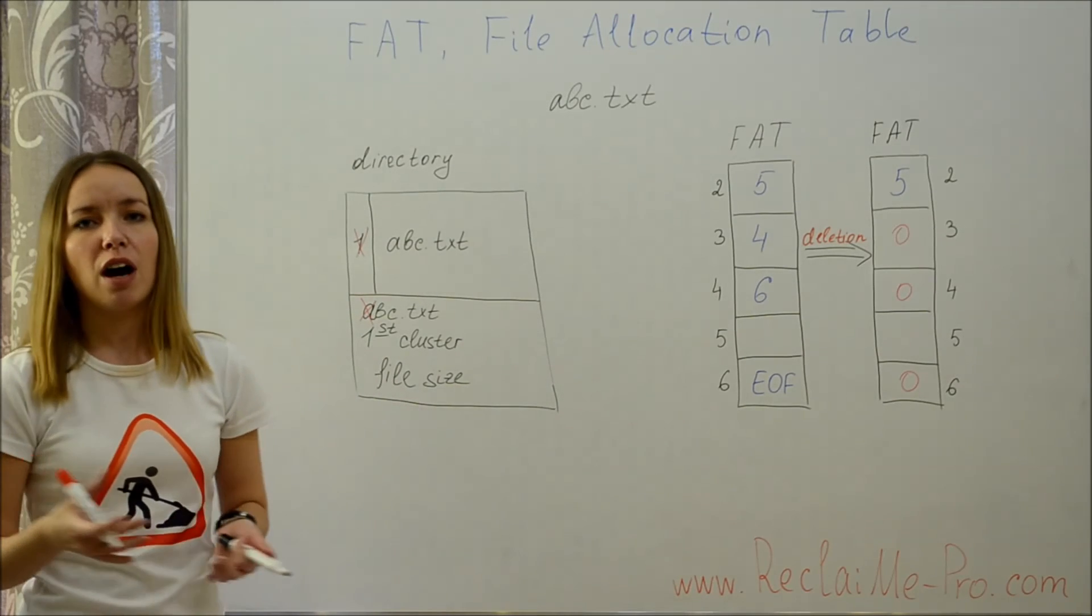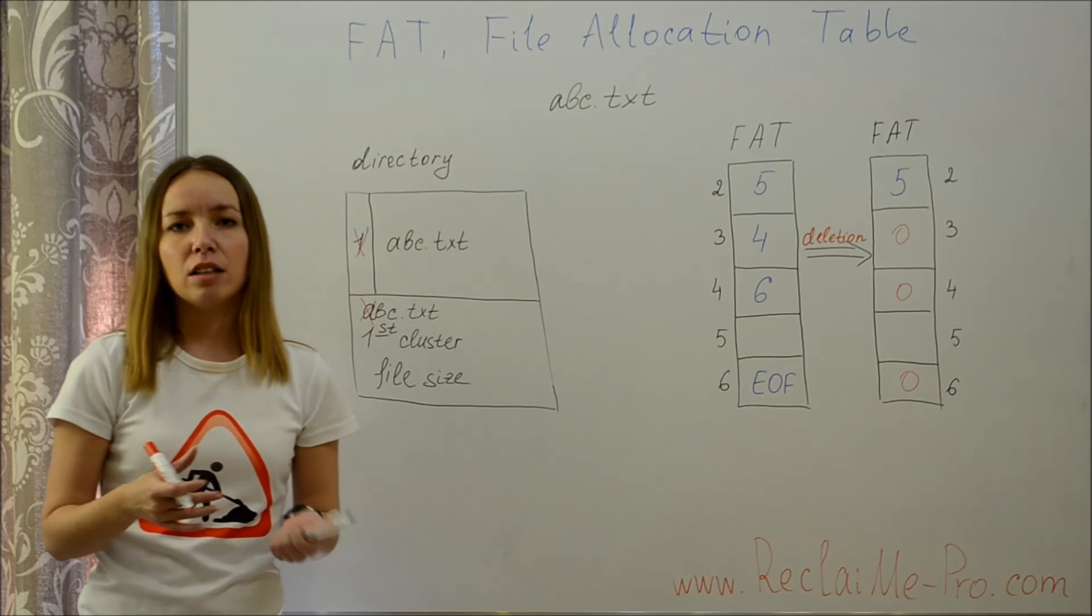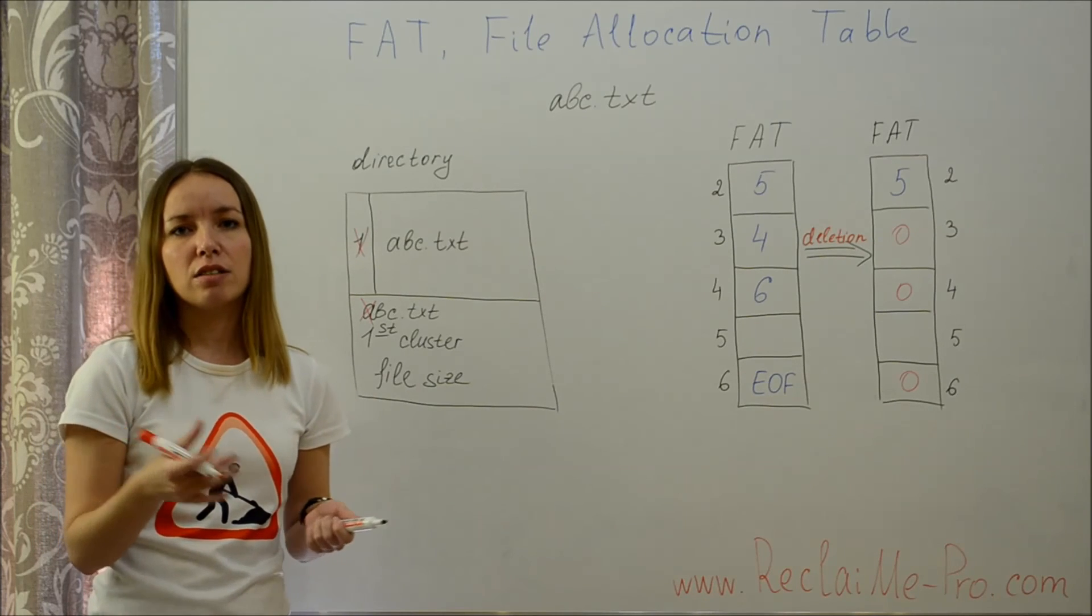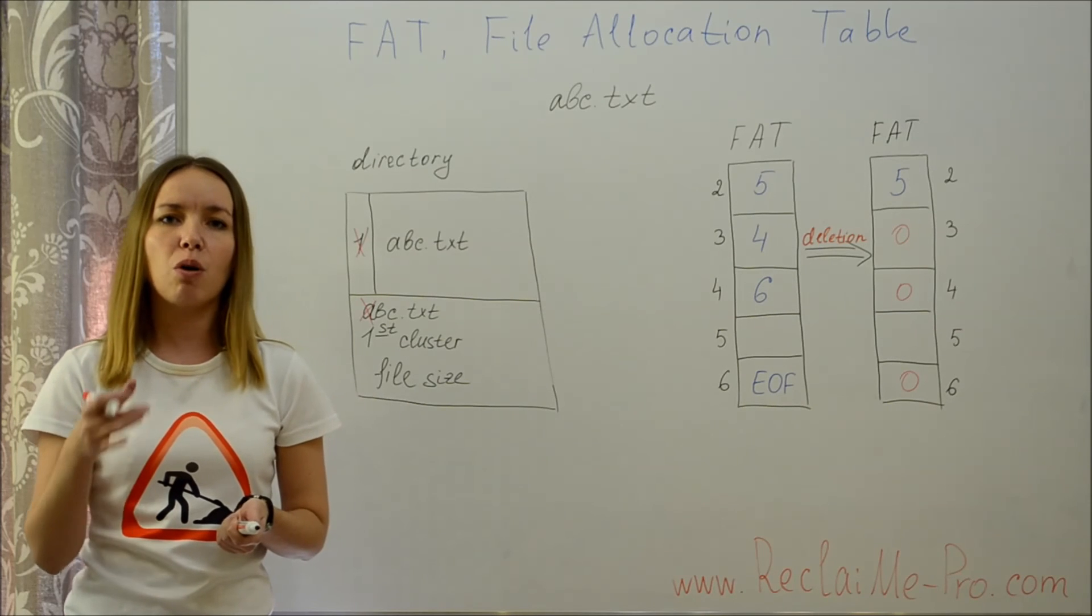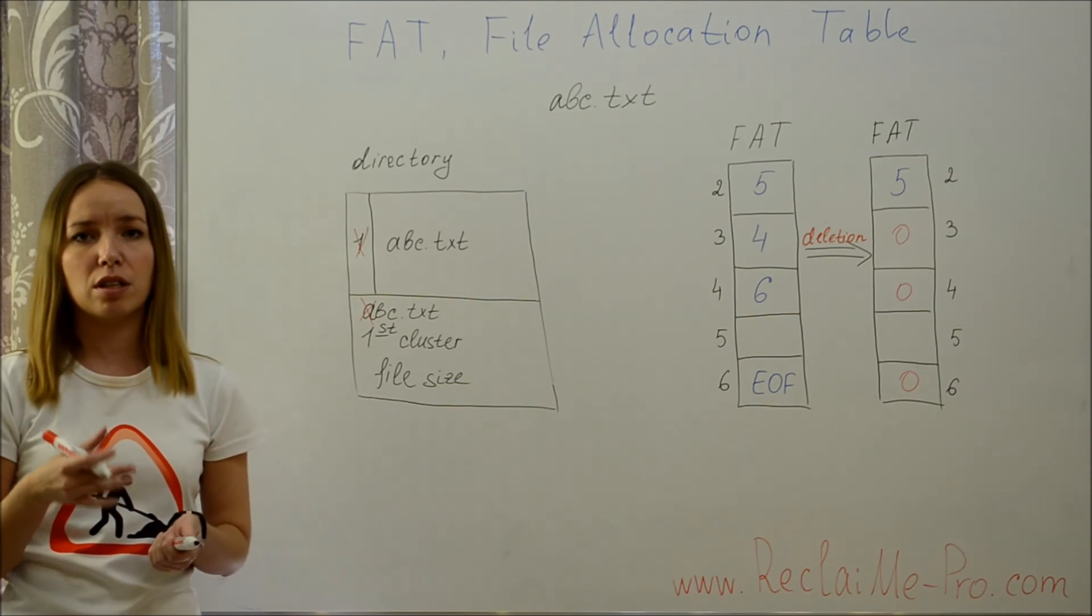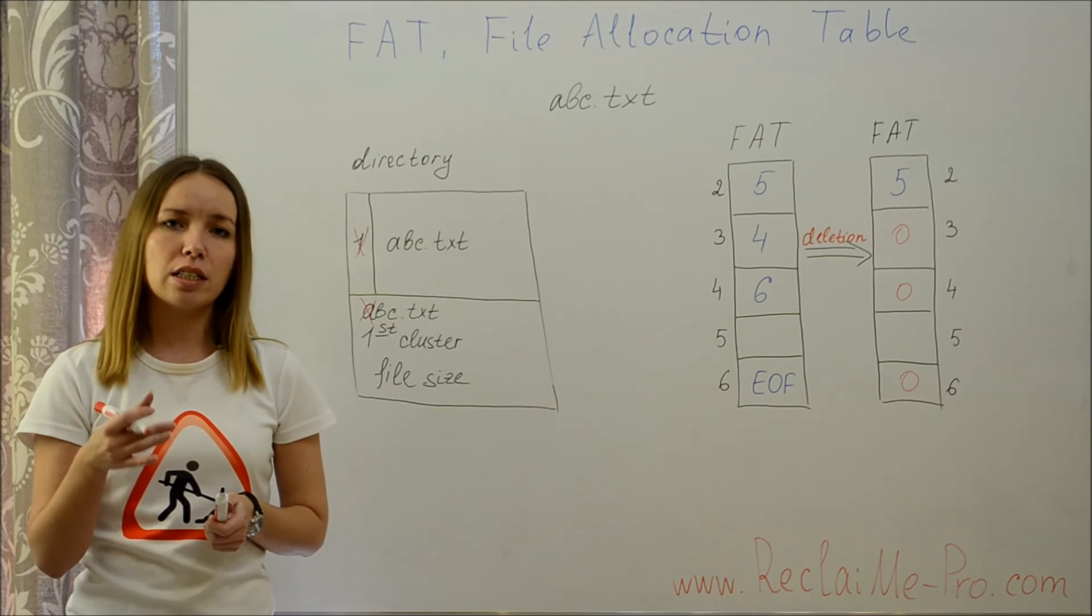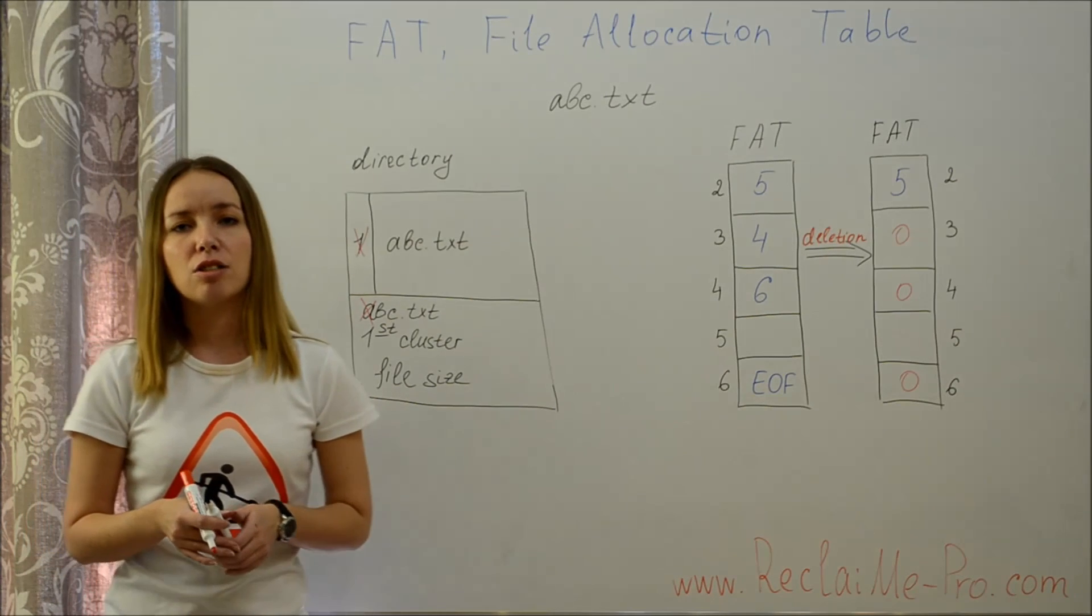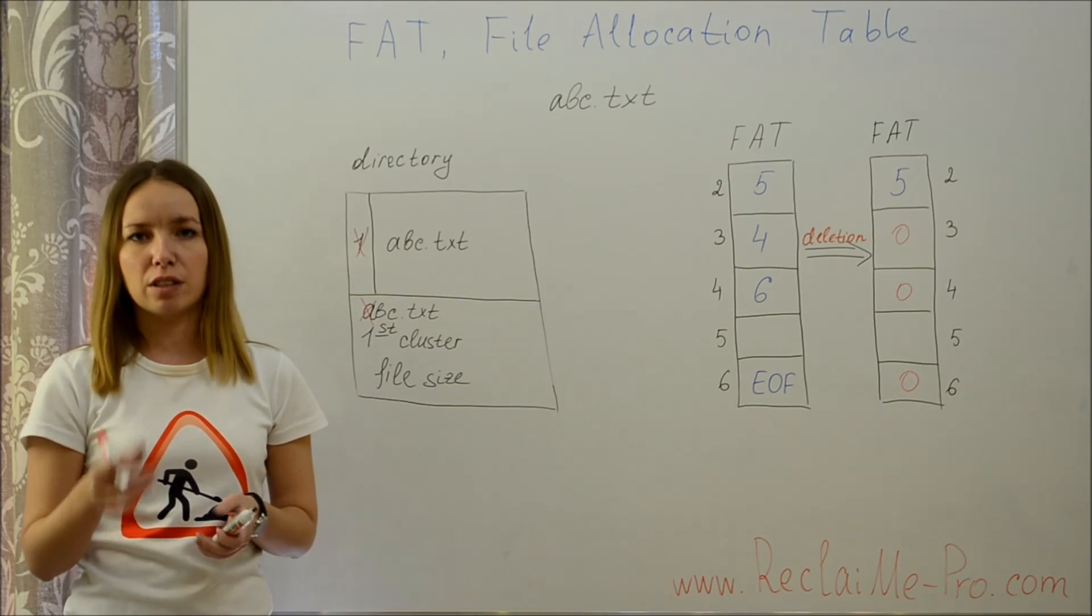Directories can be found by their beginnings. While technically there is no header in a directory, the first element always has name dot and describes the directory itself. The second element has name dot dot and describes the parent directory.